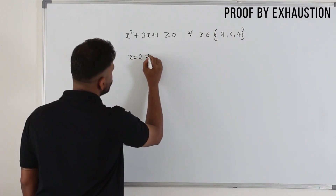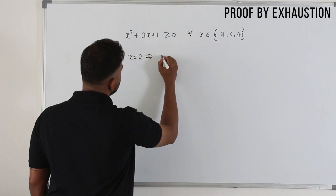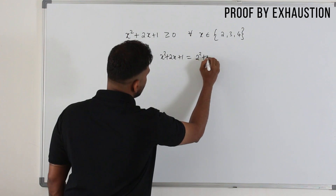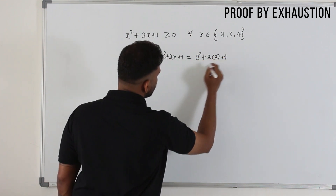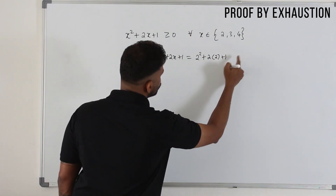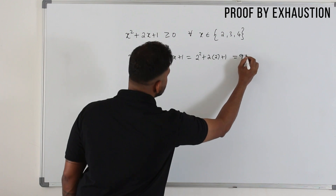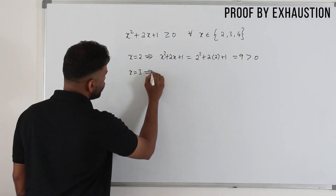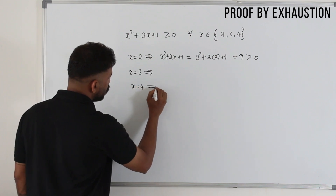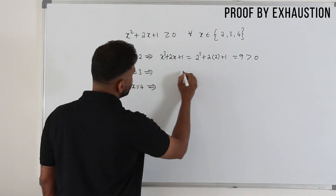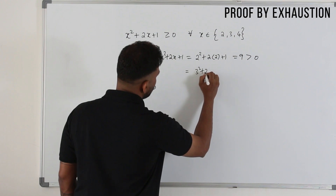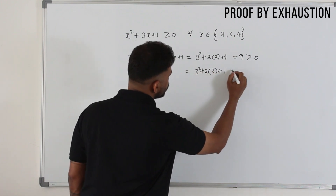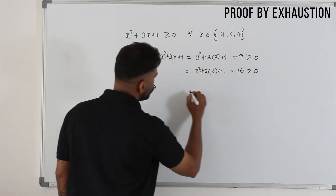Take x = 2. So x² + 2x + 1 becomes 2² + 2(2) + 1 = 4 + 4 + 1 = 9, which is greater than 0. Then take x = 3: 3² + 2(3) + 1 = 9 + 6 + 1 = 16, which is greater than 0.